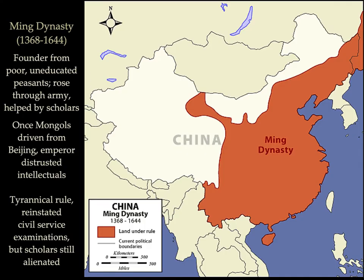The founder of the Ming dynasty was from a poor, uneducated peasant class who rose through the army, helped by the Literati scholars. Once the Mongols had conquered all of the Eastern world under Genghis Khan, the emperor began to distrust intellectuals and enforced a tyrannical type of rule.